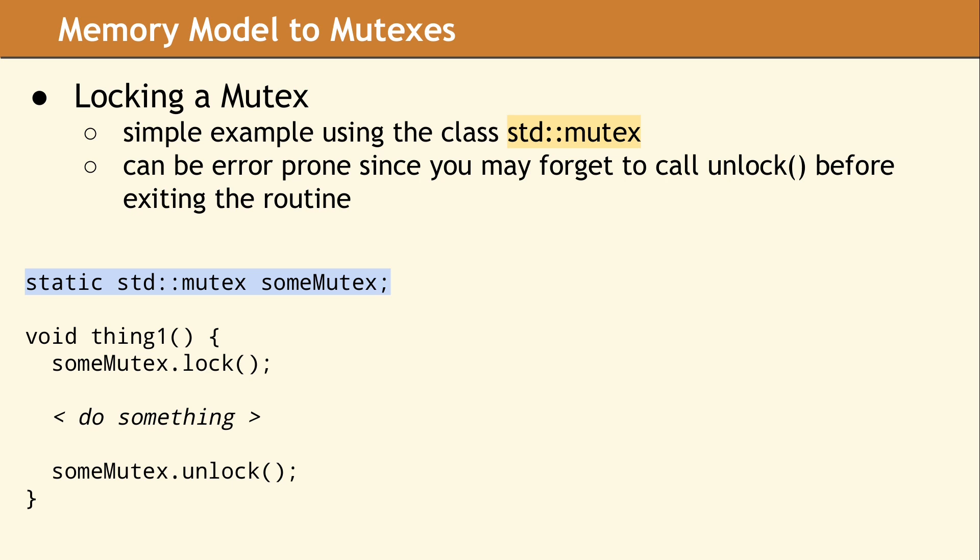In this first example, we are declaring a file-local static mutex object. It is also common for the mutex object to be a class data member, or occasionally a global variable. In the function thing1, we call lock, do something, and then at the end call unlock. It is important to observe that the exact same mutex object needs to be visible in thing1, no matter which thread calls this function. If some mutex were declared locally in thing1, then every call to this function would be locking a different mutex — this defeats the purpose, and the call to lock would have zero effect. There is, however, a serious problem with this code: if any statement in the body might throw an exception or return early, the mutex will not be unlocked.